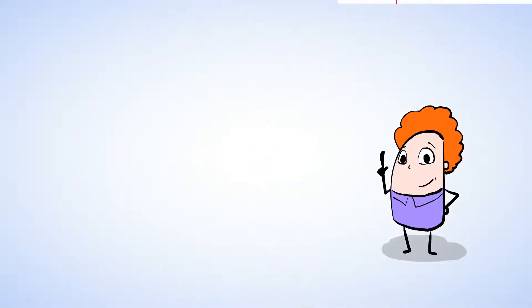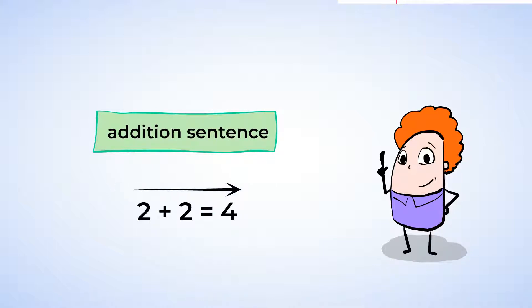Let's use our mighty math skills to write an addition sentence. An addition sentence has three or more numbers, a plus sign and an equal sign. We read a math sentence left to right, just like normal reading. But instead of words, we say the numbers. For example, two plus two equals four, and that's an addition sentence.